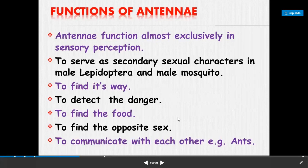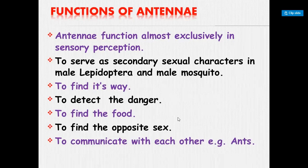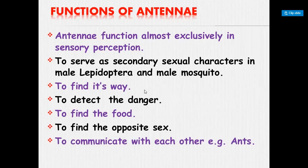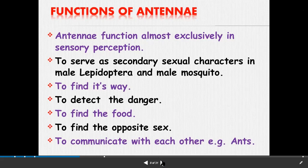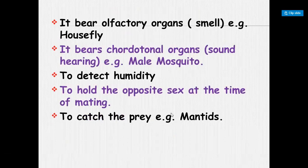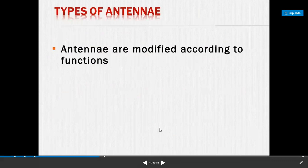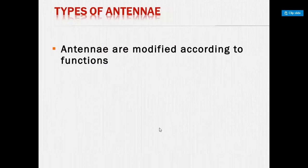The main functions of antenna are: antenna function almost exclusively in sensory perception; they serve as a secondary sexual character in male Lepidoptera and male mosquito; to find its way, detect danger, find food, find the opposite sex, and communicate with each other — for example, ants. They bear olfactory organs for smell, for example in housefly; they bear chordotonal organs for sound hearing in male mosquito; to detect humidity; to hold the opposite sex at the time of mating; and to catch prey.